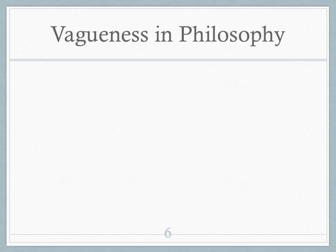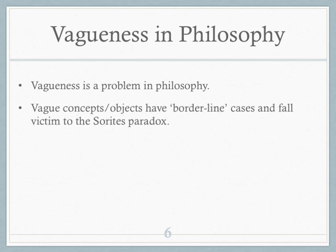Let's look at an interesting example from the history of philosophy — it's been a problem for a really long time. It has to do with concepts or objects that have borderline cases, or fall victim to what's called the sorites paradox. This goes all the way back to ancient Greece. The word 'sorites' is Greek for heap, so 'heap' is a concept that might be vague.